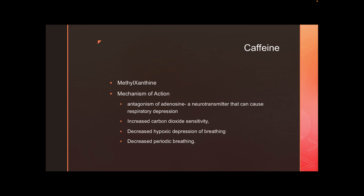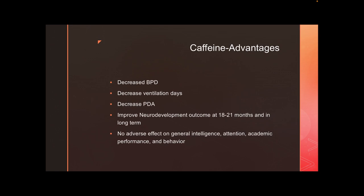Caffeine is a methylxanthine that keeps the respiratory system firing by antagonizing adenosine receptors. Adenosine causes respiratory depression, so antagonism of adenosine releases that depression and tells the respiratory center to continue firing signals. Caffeine increases carbon dioxide sensitivity, decreases hypoxic depression, and decreases periodic breathing.